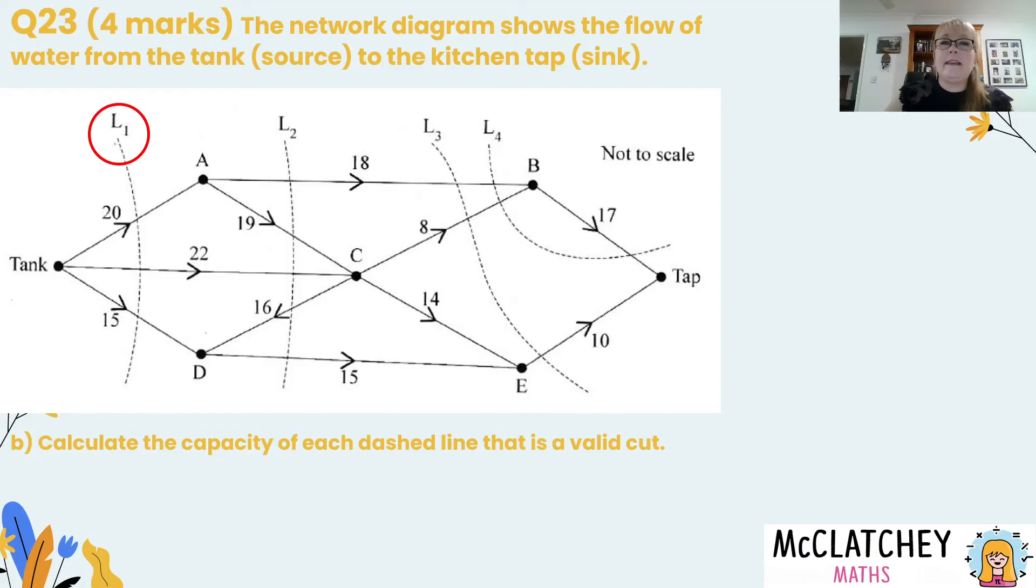Part B now wants us to calculate the capacity of each cut that is a valid cut. There are three valid cuts if you remember. They were L1, L2 and L3 and we get a mark for each of those capacity calculations. So what we do to calculate the capacity is we're actually going to calculate the numbers of all of these flow lines that pass through that cut. So we're going to add a 20, a 22 and a 15 and that will give us a total capacity of that cut of 57.